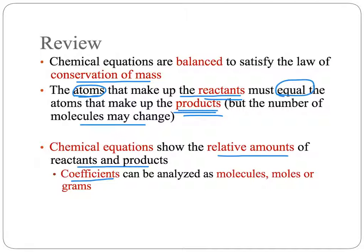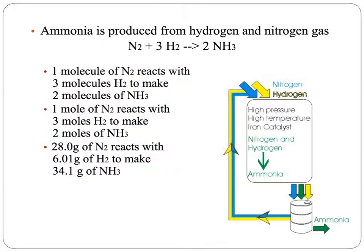We can think about the coefficients as either molecules, moles, or — if we do the conversion from moles into grams — grams of the different substances. So let's look at an example. Ammonia is produced from hydrogen gas and nitrogen gas in this process, and I've given you a balanced chemical equation here.